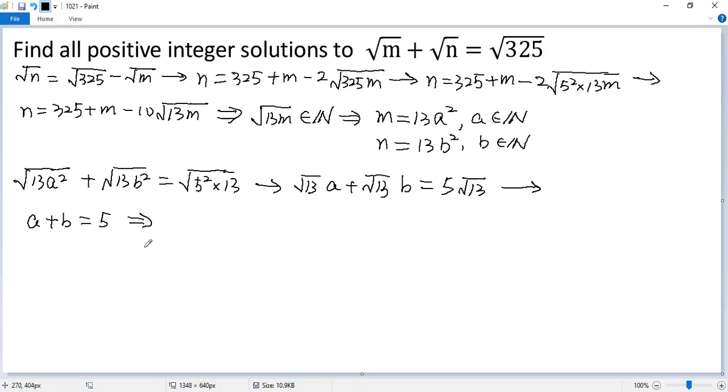So the possible values for a, b would be: a, b equals 1, 4. If a is 2, then b is 3. If a is 3, then b is 2. Finally, if a is 4, then b is 1.